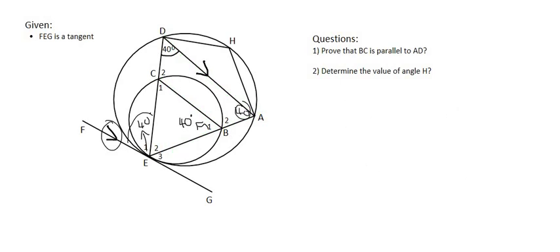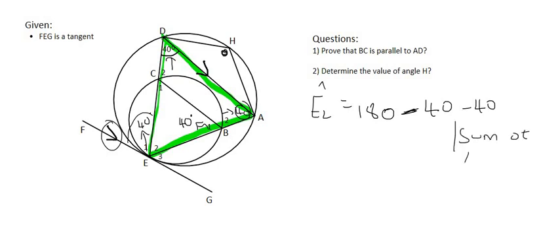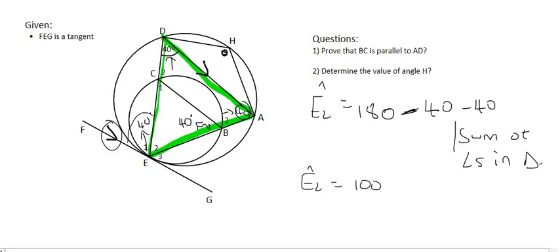The last question is to work out the angle of H. What I want to do first is look at this triangle over here. We can easily work out angle E2. Because we have that the top corner angles are both 40 degrees, and we know that all three angles in a triangle should add up to 180. So we can say 180 minus 40 minus 40 because of the sum of angles in a triangle. That means that angle E2 is going to be 100 degrees.